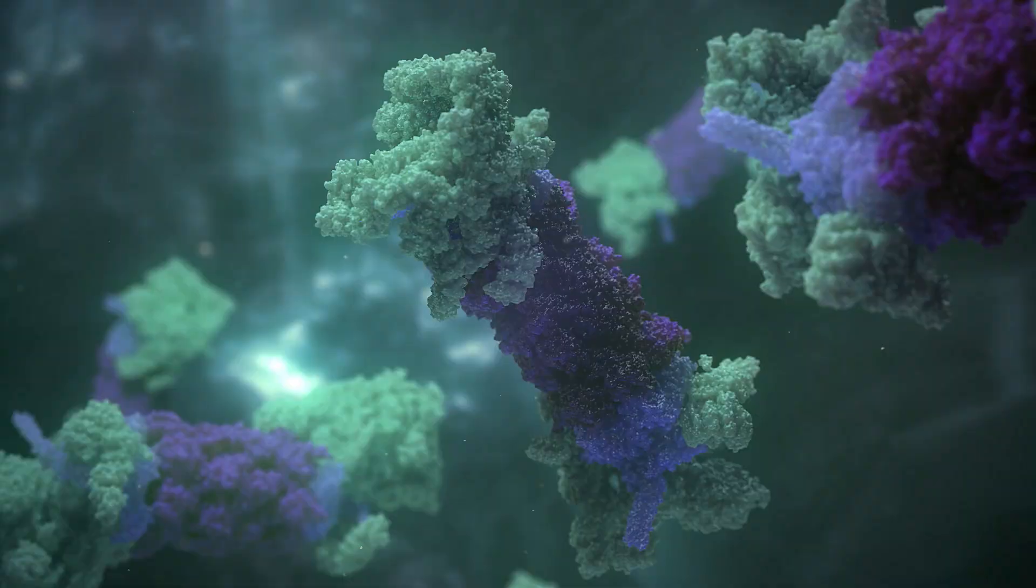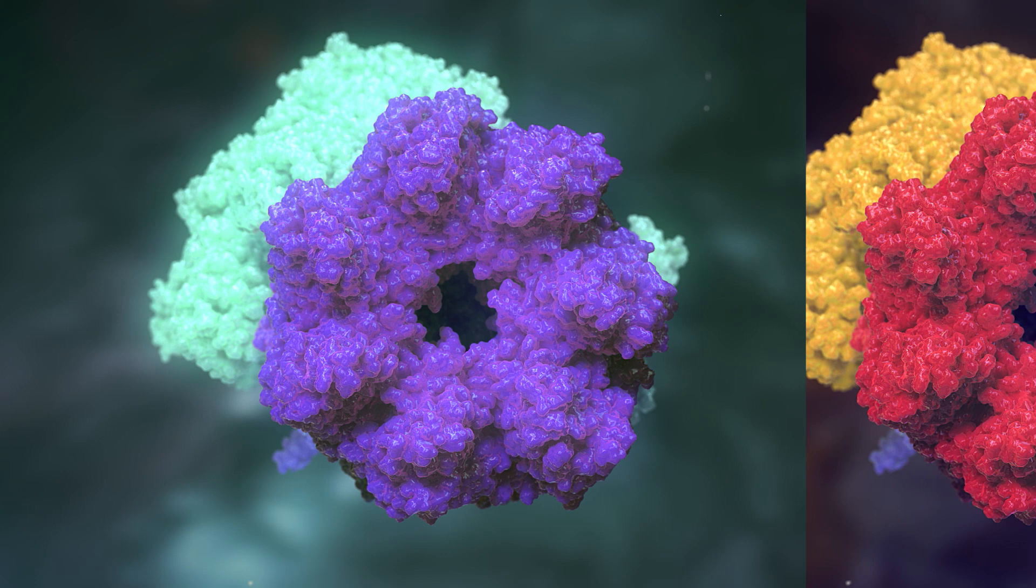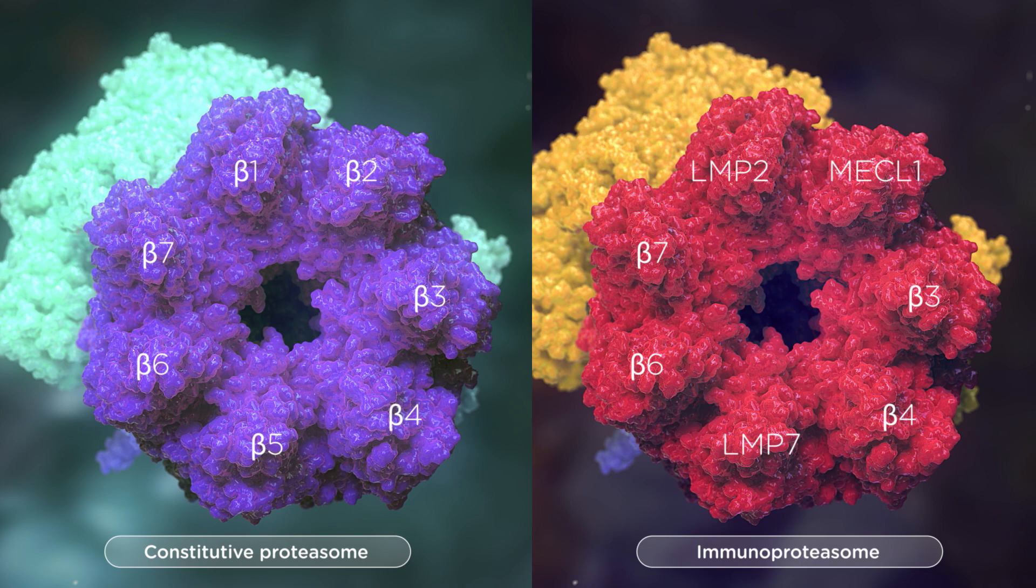Proteasomes come in two different forms: the constitutive proteasome and the immunoproteasome. In the constitutive proteasome, protein degradation is mediated by the beta-1, beta-2, and beta-5 active site subunits.